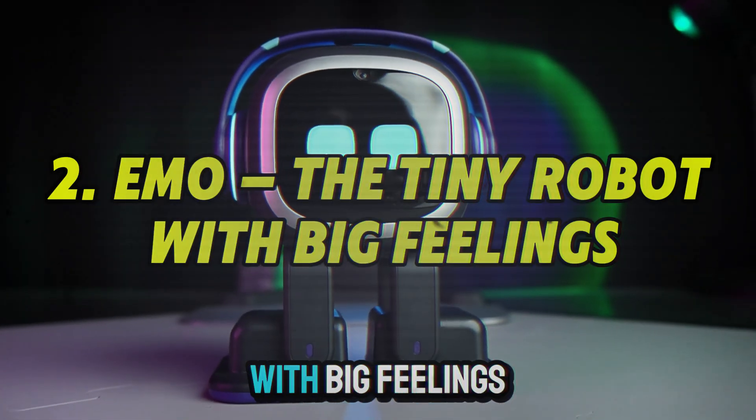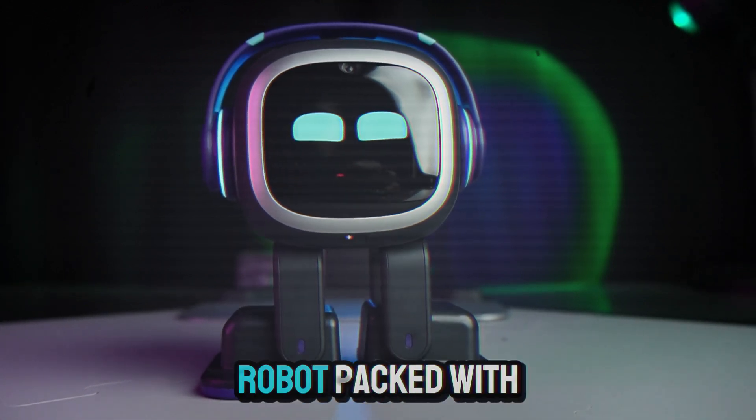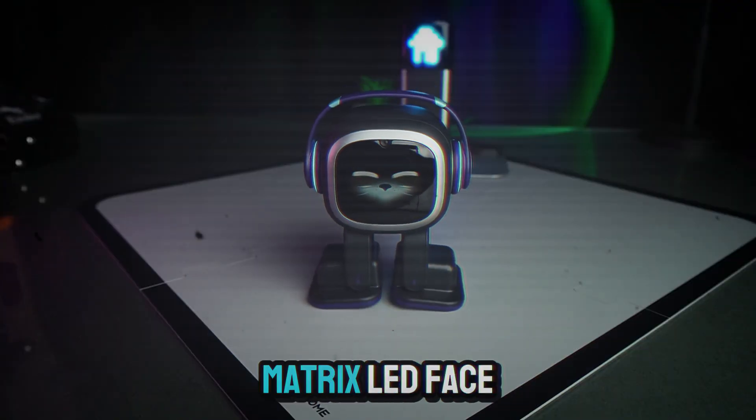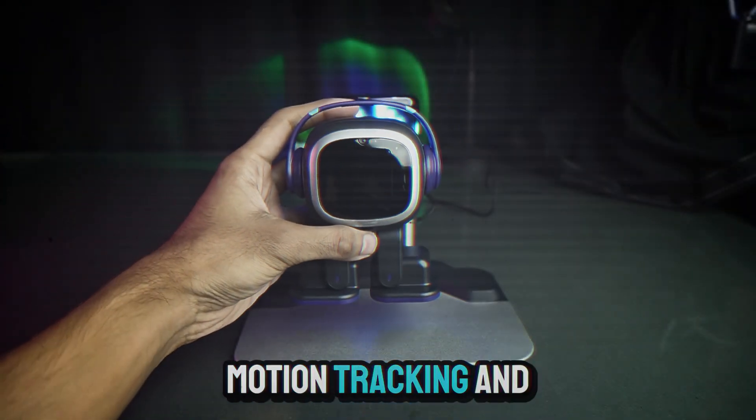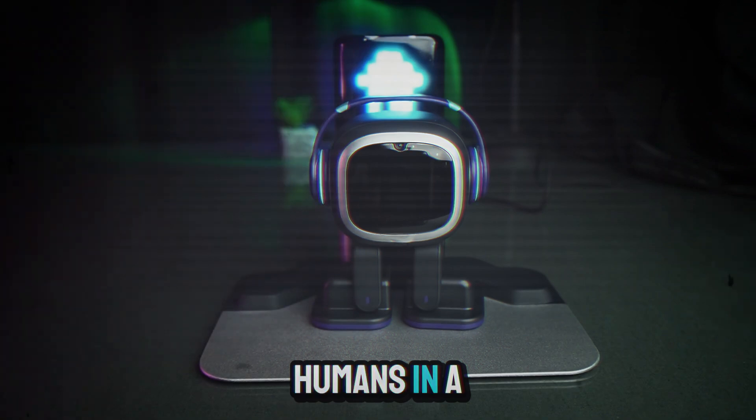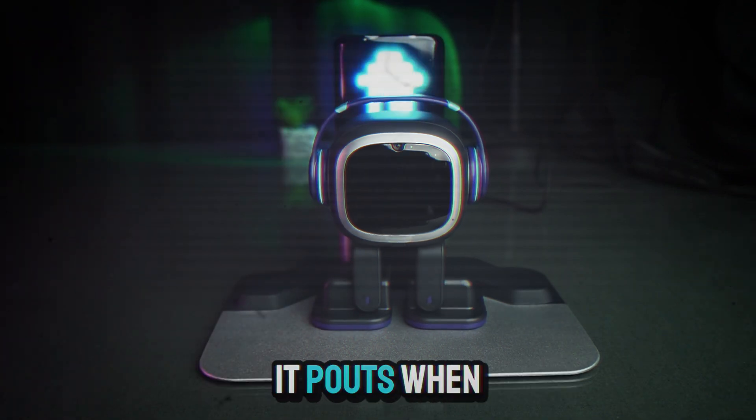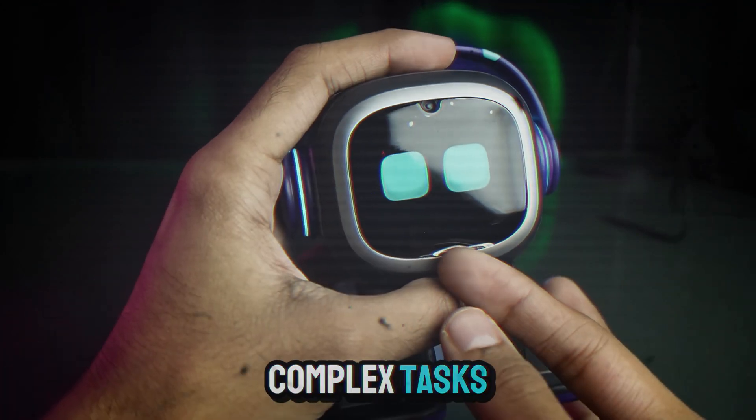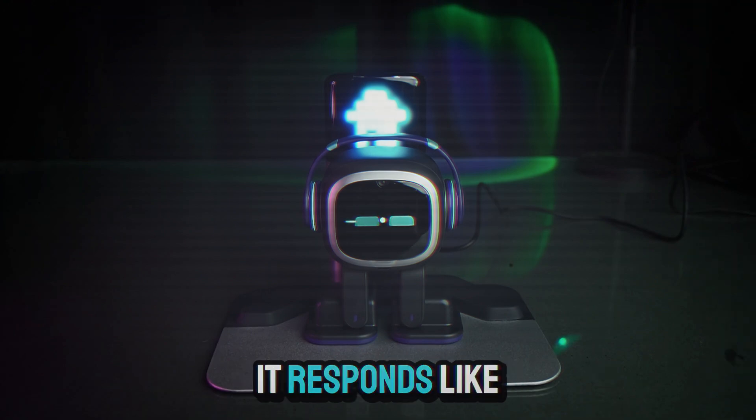2. Emo, the tiny robot with big feelings. Now meet Emo, a palm-sized robot packed with personality. Developed by Living.ai, Emo uses a matrix LED face, touch sensors, motion tracking, and voice analysis to interact with humans in a surprisingly nuanced way. It nods when spoken to. It pouts when ignored. It leans into a gentle touch and recoils from raised voices. It doesn't perform complex tasks. It doesn't deliver news or control your lights. But it does something harder. It responds like a friend.